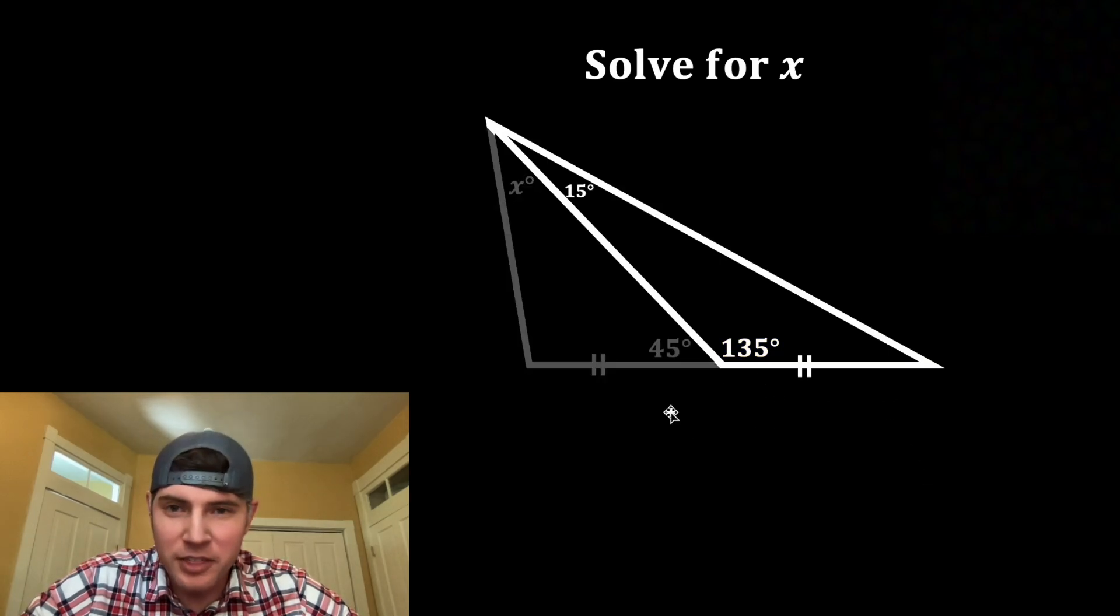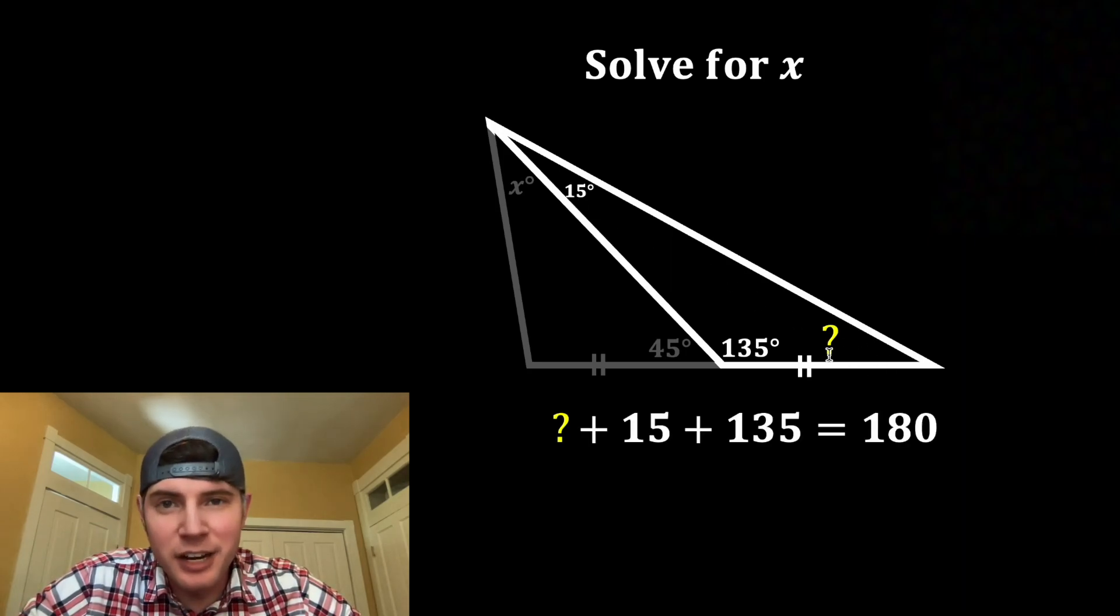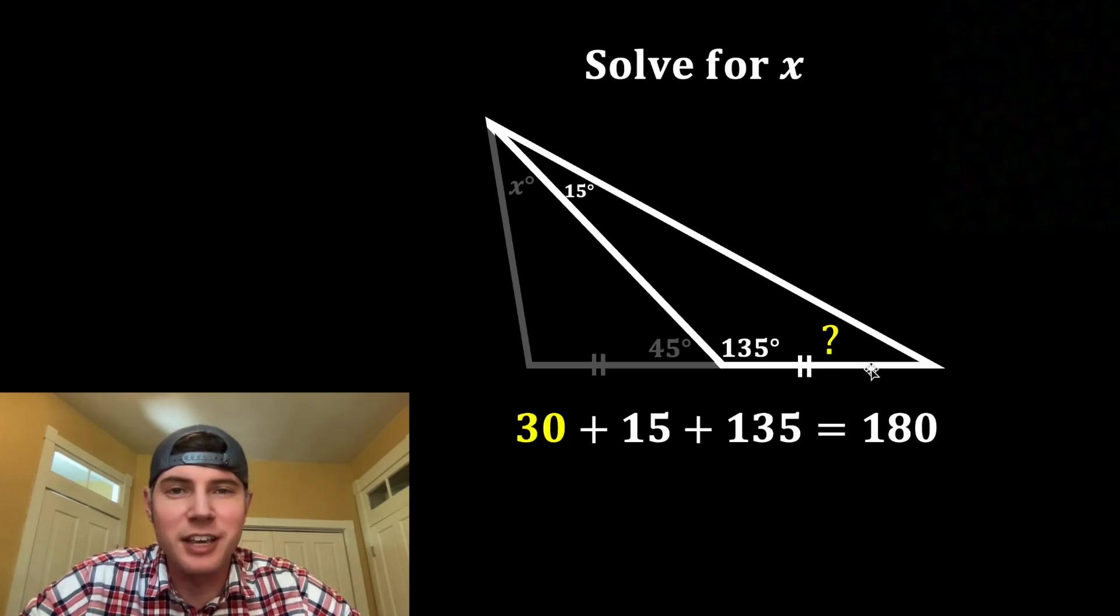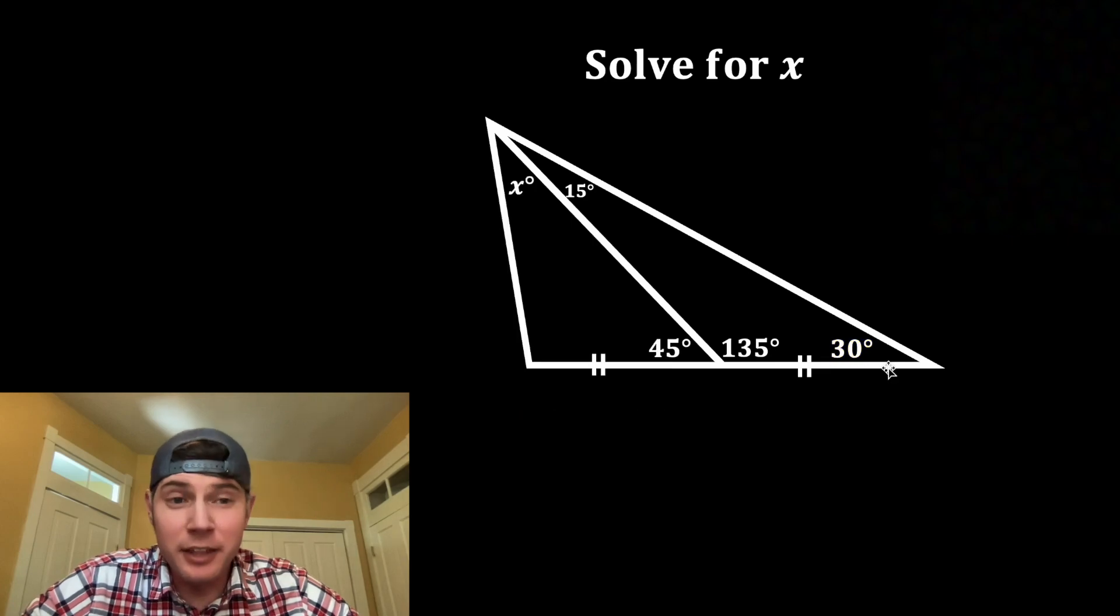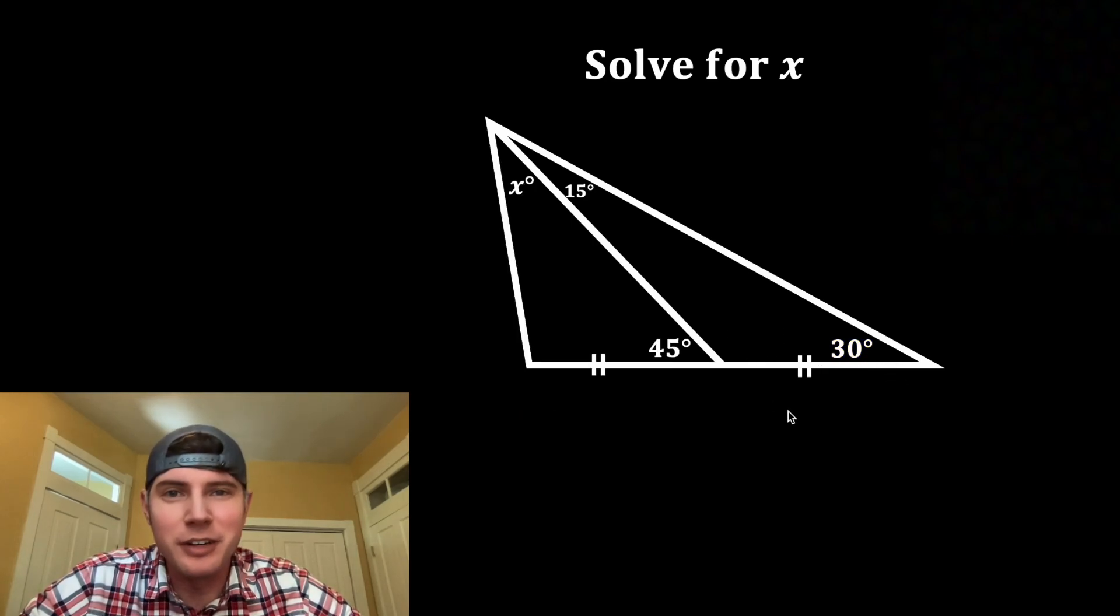Next, let's focus on this triangle right here. What is the value of this angle? The sum of the interior angles of a triangle is always equal to 180 degrees, and this will be true for 30, so we can change this angle to 30 degrees. And now that we know this 30 degrees, we won't need this 135 anymore.